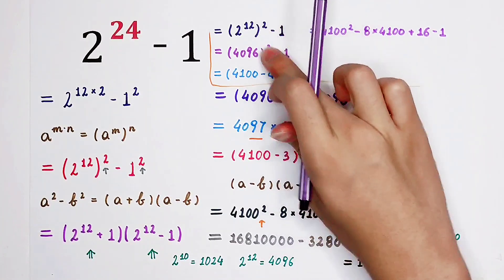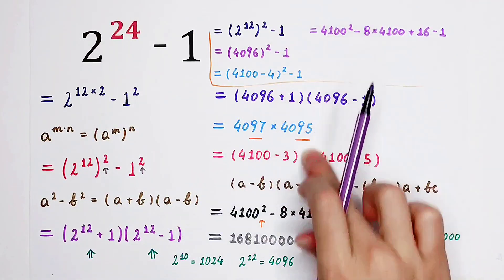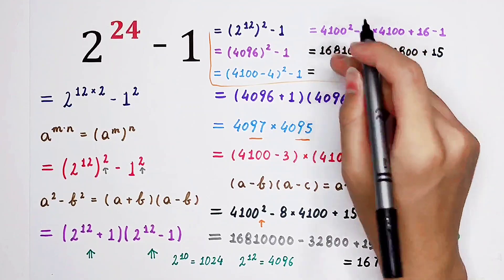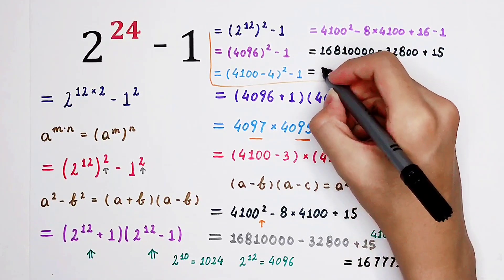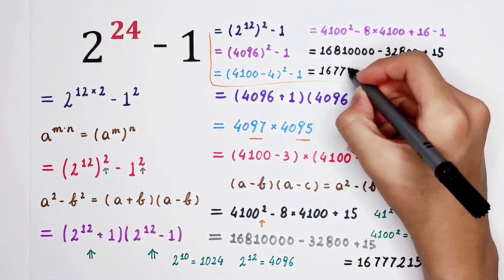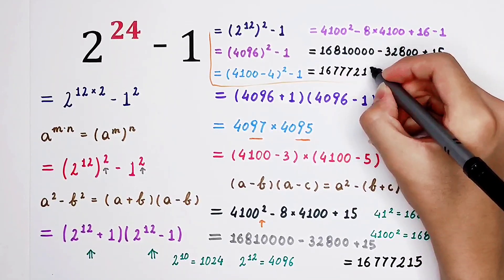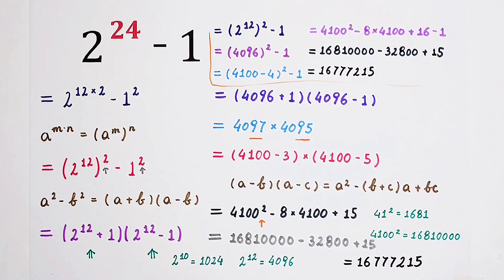They are actually the same thing. However, 4 steps. 8 steps. So then you can get the same method. Oh, sorry. The same answer. 16777215. Did you get it?